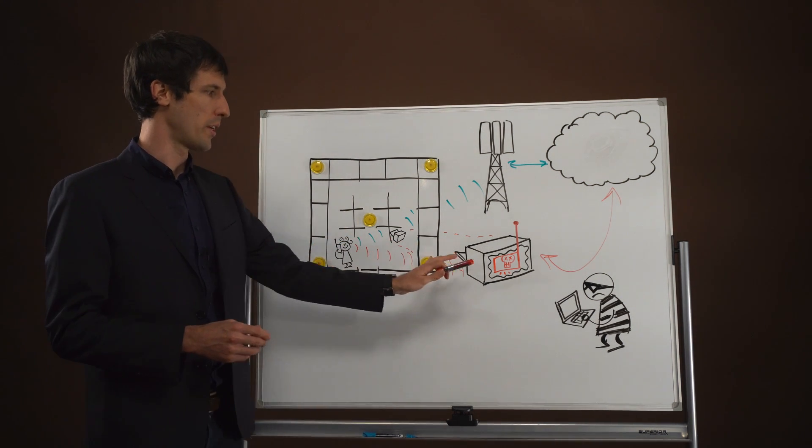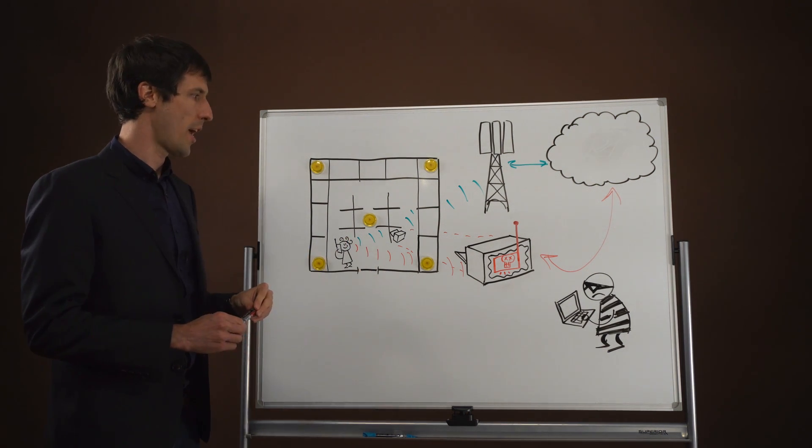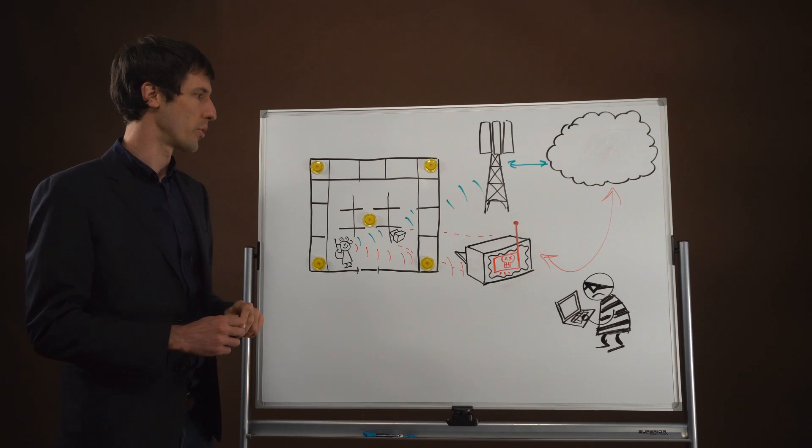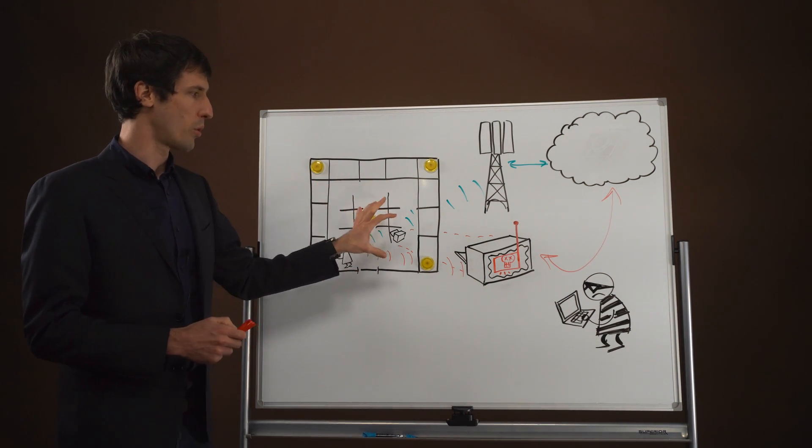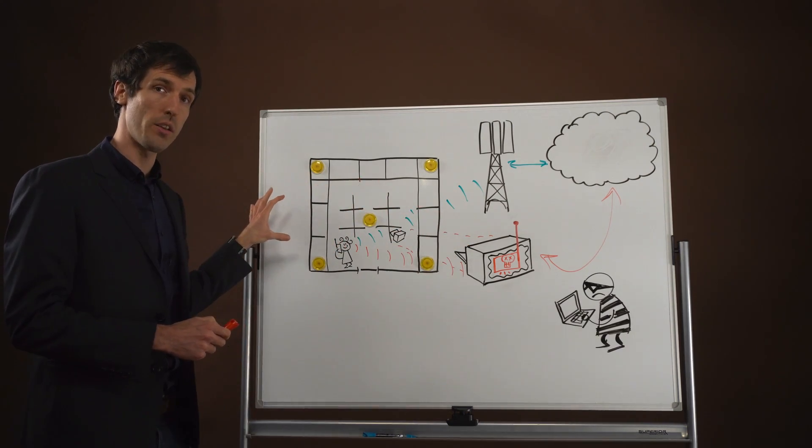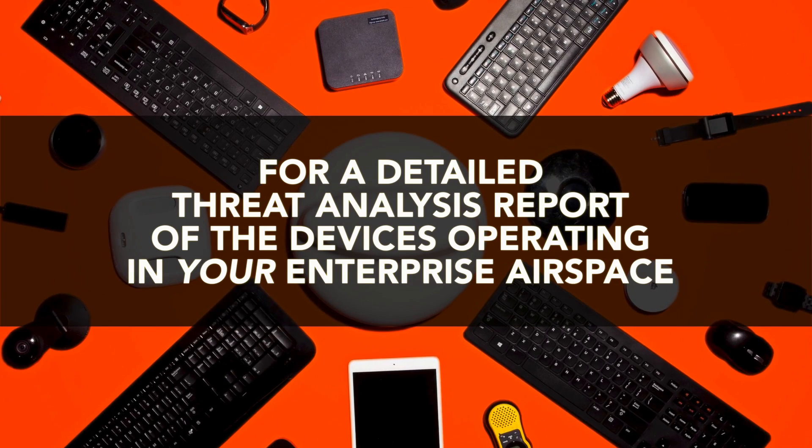This alert will then be sent to users of the Bastille solution, and personnel can come and try to actually find that rogue tower. If it's on the premises it can be removed, but the solution will also detect rogue towers that may be placed slightly outside the office perimeter. For more information, please visit our website.